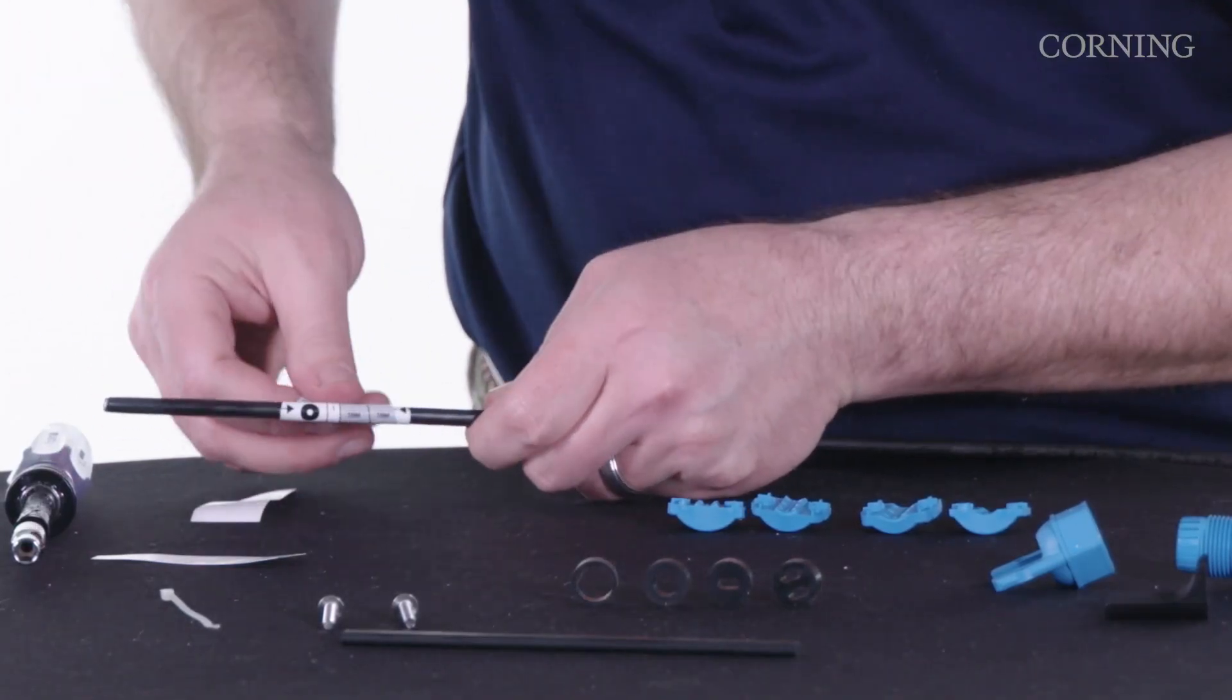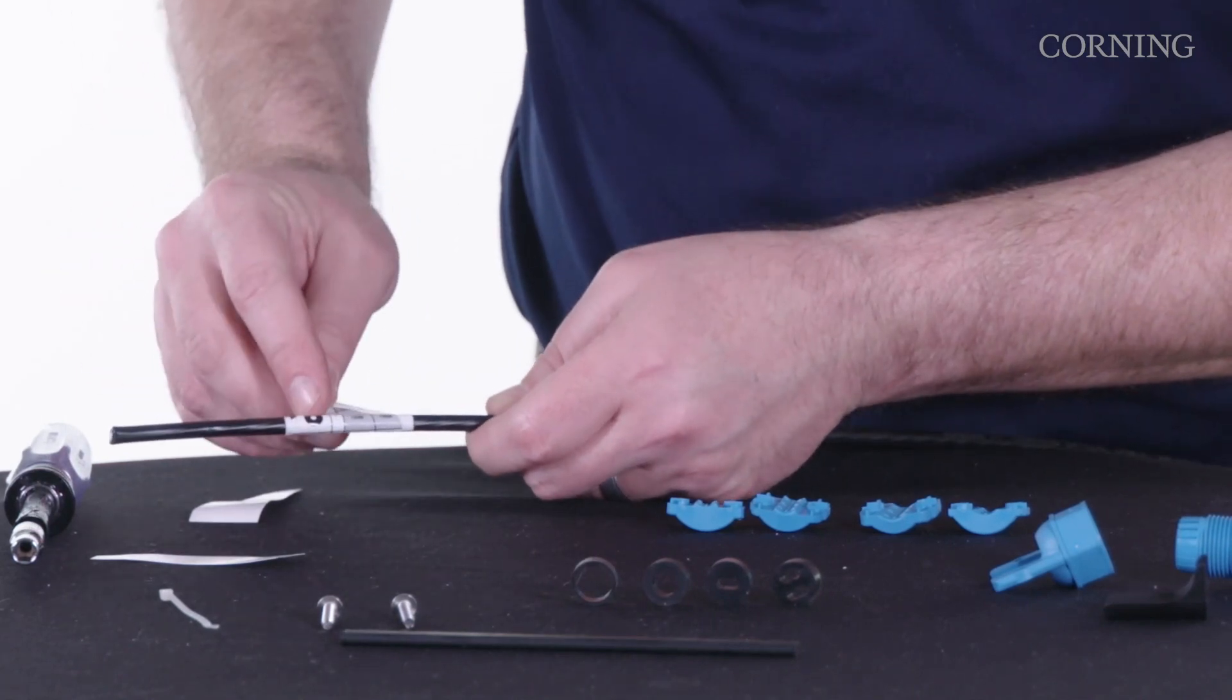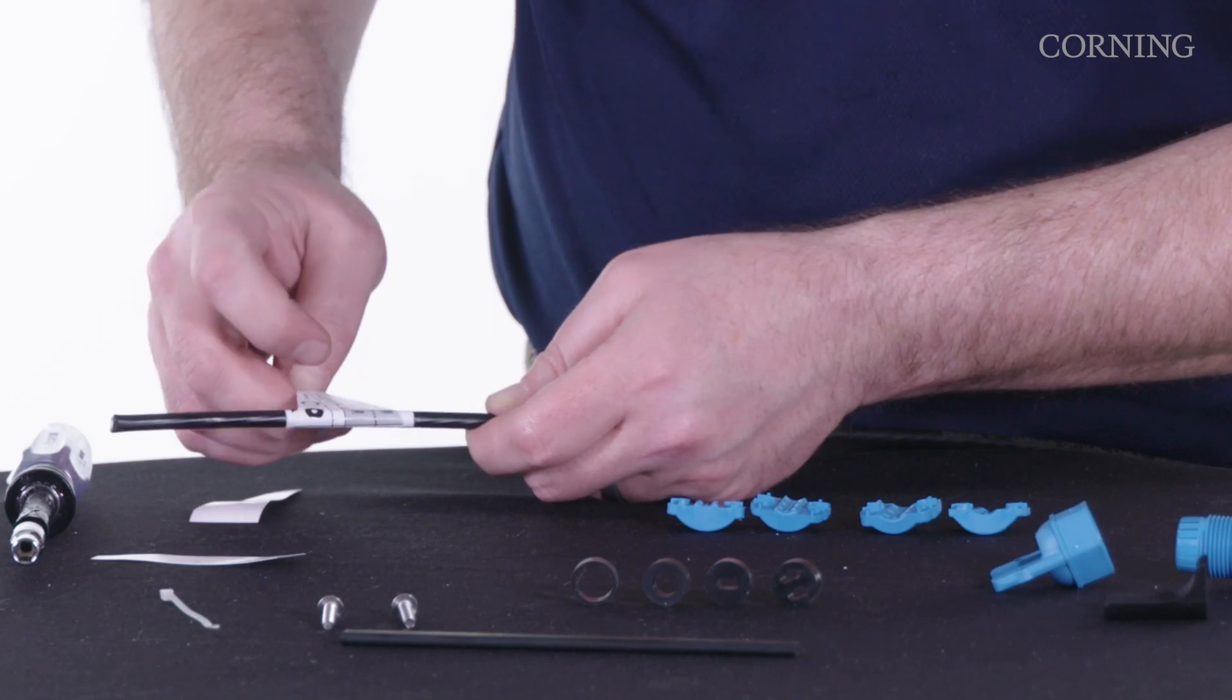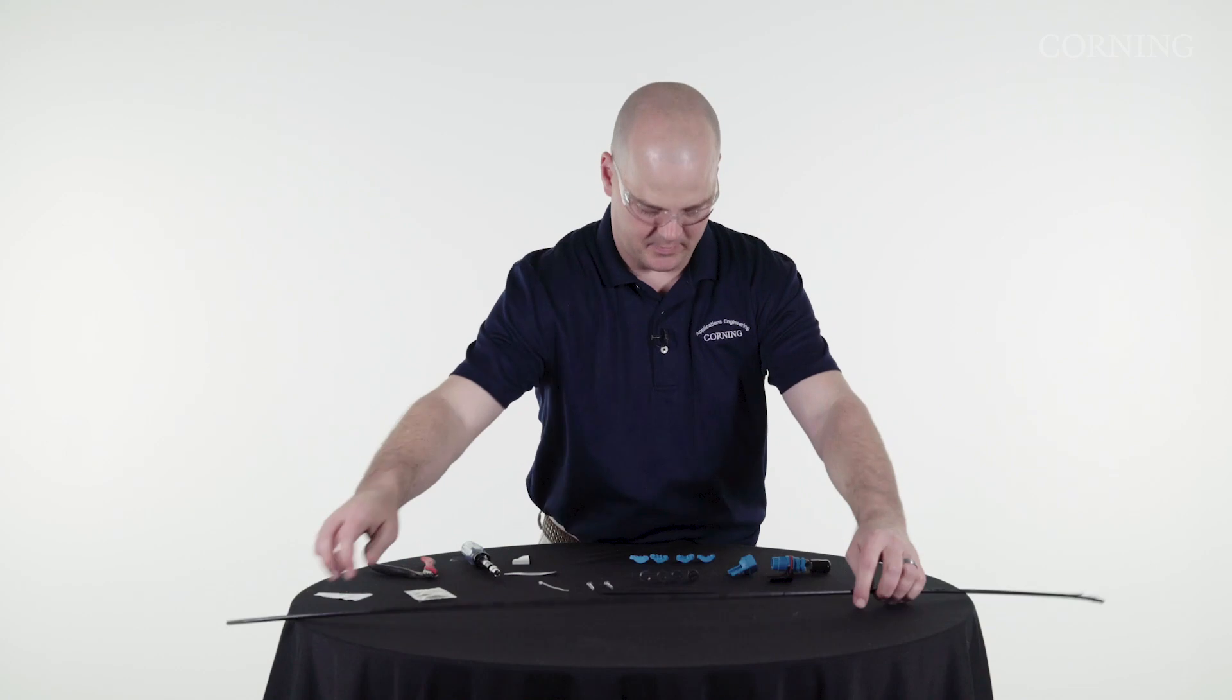So I have arrows, and you can see this in the instructions, but I have arrows that point across here. What it tells me is to use the smaller of the round grommets, bushing number one, and I need to trim it. And the same thing with the nut clamp I need to trim.